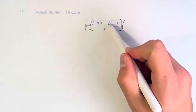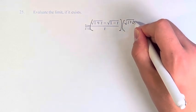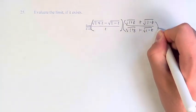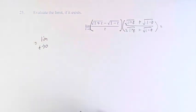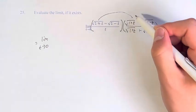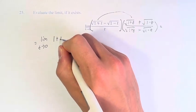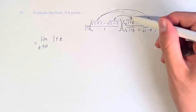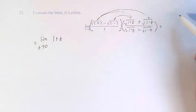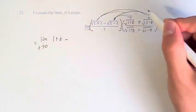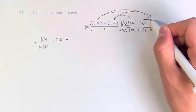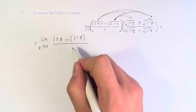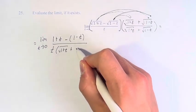If we have the square root of 1 plus t minus the square root of 1 minus t, what we're going to multiply by is the square root of 1 plus t plus the square root of 1 minus t — and of course multiply the denominator by the same thing. The square root of 1 plus t squared gives 1 plus t. The middle terms cancel since we have something minus itself. And subtracting the square root of 1 minus t squared gives us minus (1 minus t). This is divided by t times the square root of 1 plus t plus the square root of 1 minus t.